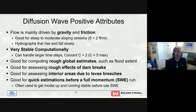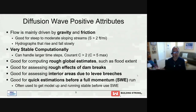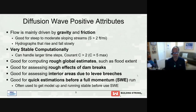Diffusion wave equations are also very stable — they can handle larger time steps than the full shallow water equations. The documentation recommends setting the Courant number to two as a base time step, and it can even handle Courant numbers up to five or larger. Diffusion wave is good for computing rough global estimates like flood extents, dam break models as a starting point, and assessing interior areas for levee breaches. It's also useful as a starting method until the model is stable, then you can switch to full equations to compare.